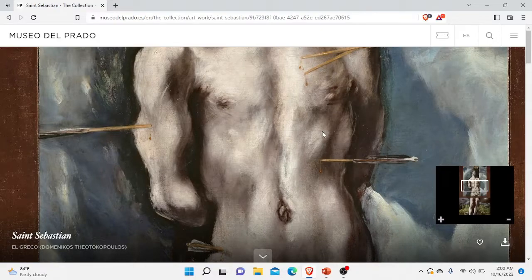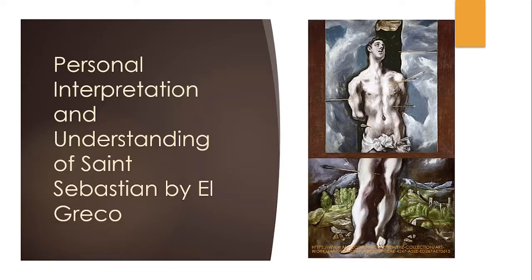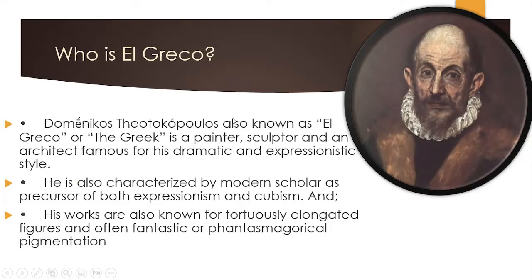Before we know the true story and meaning of this painting, we must first know the painter. Who is El Greco? El Greco, or Domenico Stiartopoulos, also known as El Greco or 'the Greek,' is a painter, sculptor, and architect famous for his dramatic and expressionistic style. He is characterized by modern scholars as a precursor of both expressionism and cubism, and his works are also known for historically elongated figures and often fantastic and phantasmagorical pigmentation. His style features elongation of body figures in order to express his dramaticism.